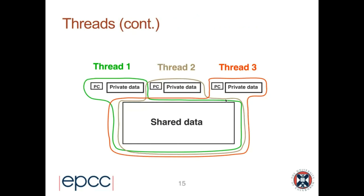To illustrate: with three threads, each thread has its own program counter and its own private data, but all threads have access to some common shared data, which is how threads cooperate and communicate data between them.